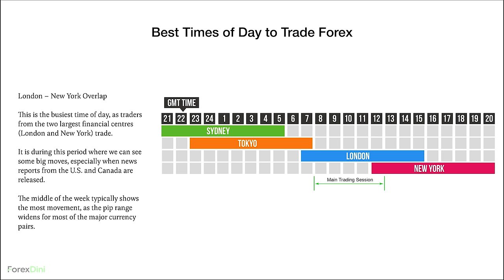Looking at average pip movement during each session, the London session normally provides the most movement. The best time of day to trade is the London-New York overlap — between 12pm and 3pm two major trading sessions coincide, meaning you will experience high volatility. This is where we can see some big moves, especially when news reports from the US and Canada are released. The middle of the week typically shows the most movement as the pip range widens for most major currency pairs.